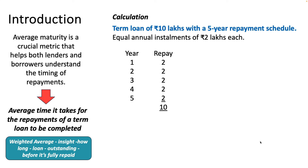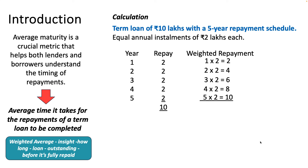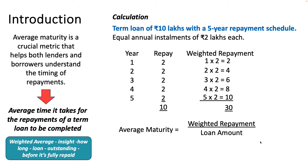Now for finding the average maturity we perform a small computation — we multiply the year with the repayment to find the weighted repayment. Year 1 × 2 = 2 lakhs, Year 2 × 2 = 4 lakhs, Year 3 × 2 = 6 lakhs, Year 4 × 2 = 8, Year 5 × 2 = 10. Total weighted repayment is 30 lakhs. Average maturity = weighted repayment ÷ loan amount = 30 ÷ 10 = 3 years.